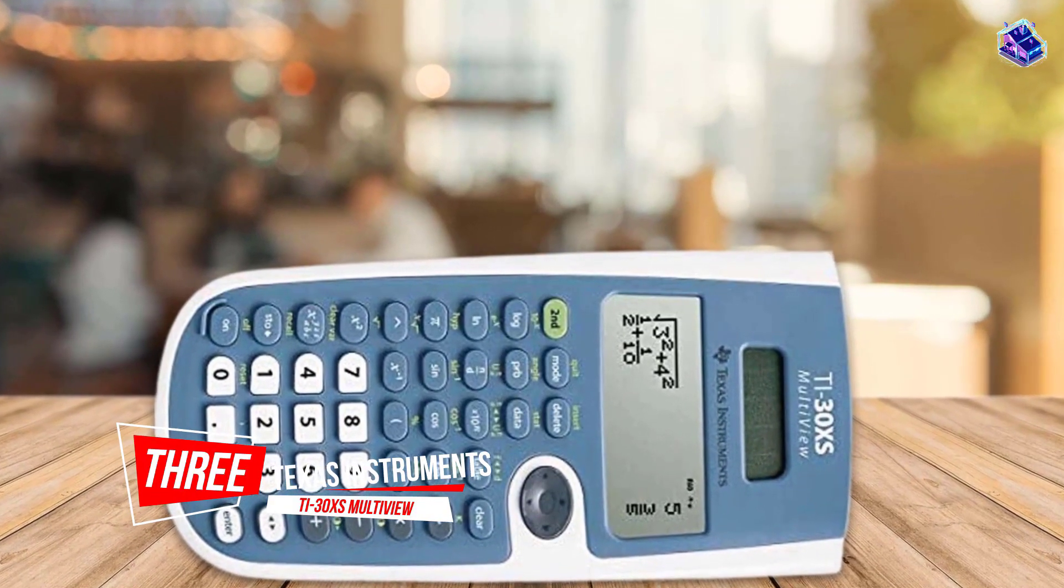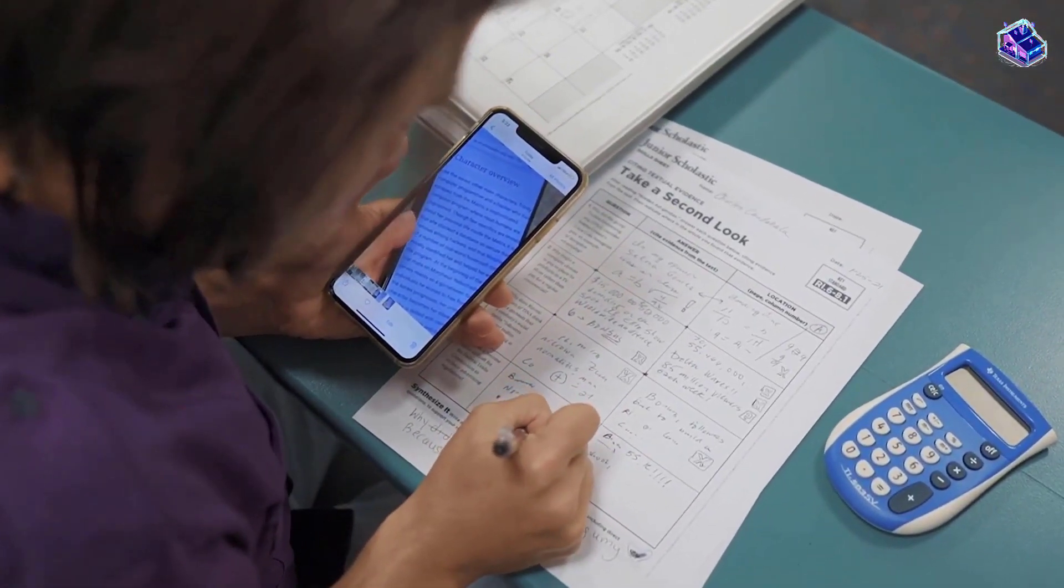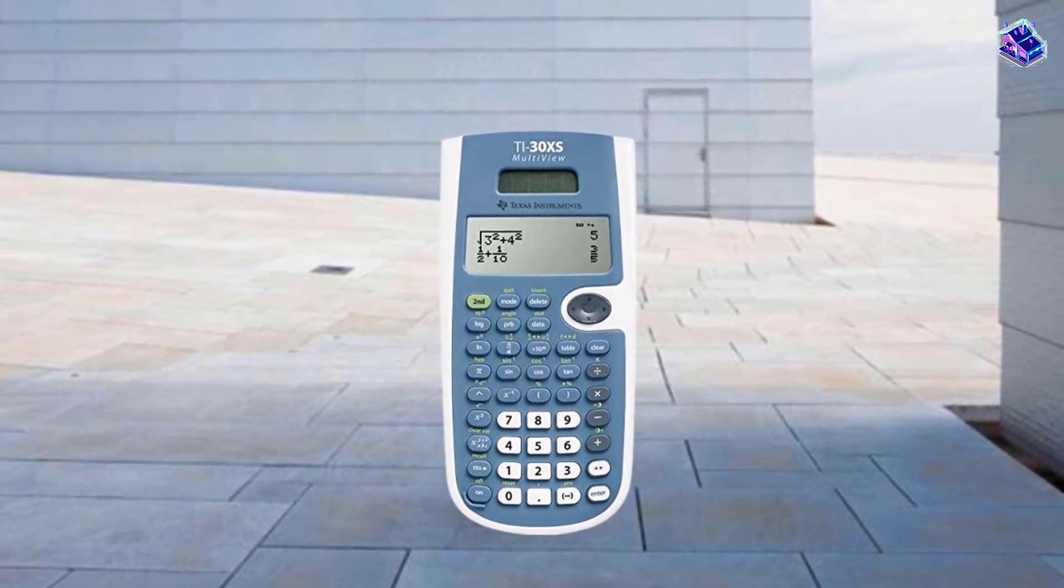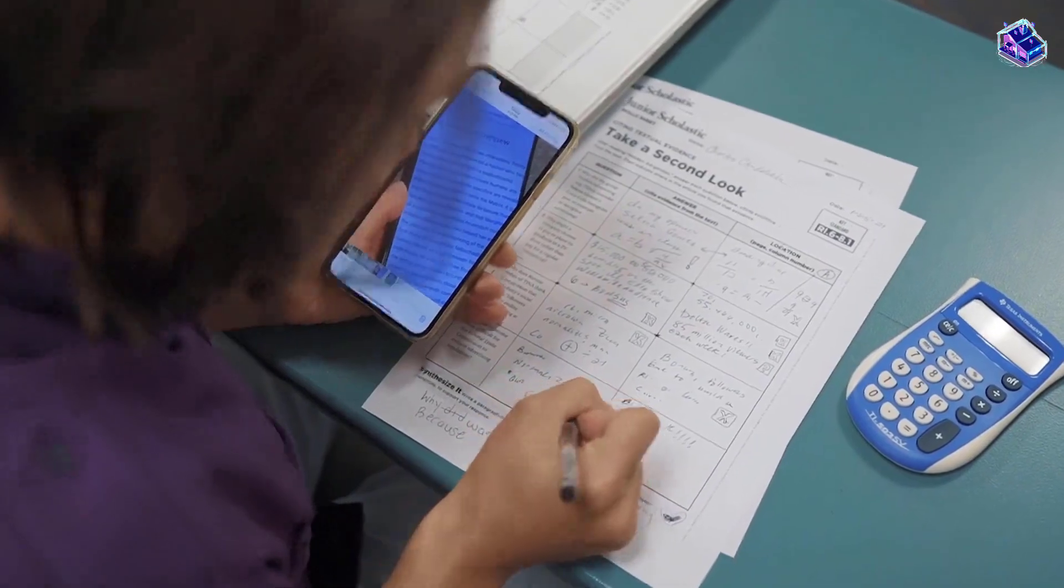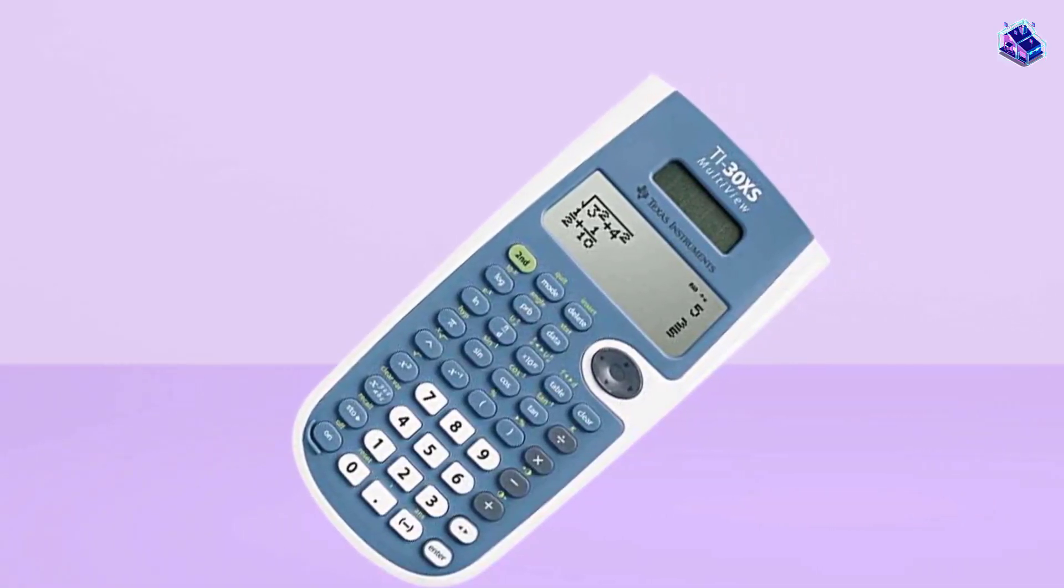Texas Instruments is well known among calculator nerds for producing some of the best devices at a reasonable price. The TI-30XS retails for just over $15 and comes packed with high-level math functions and a four-line display.